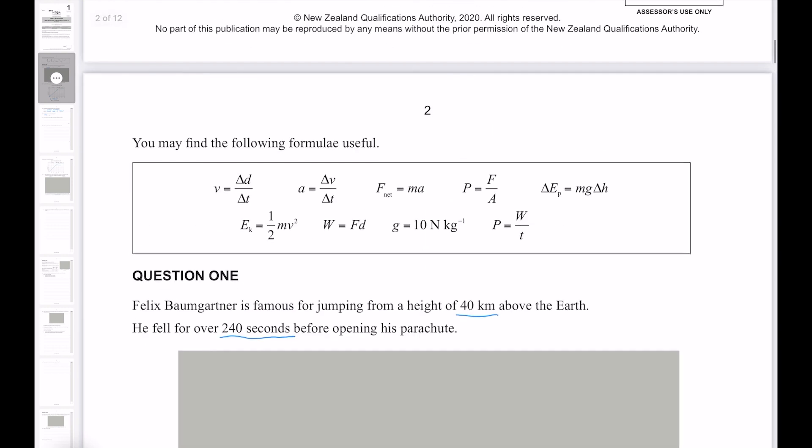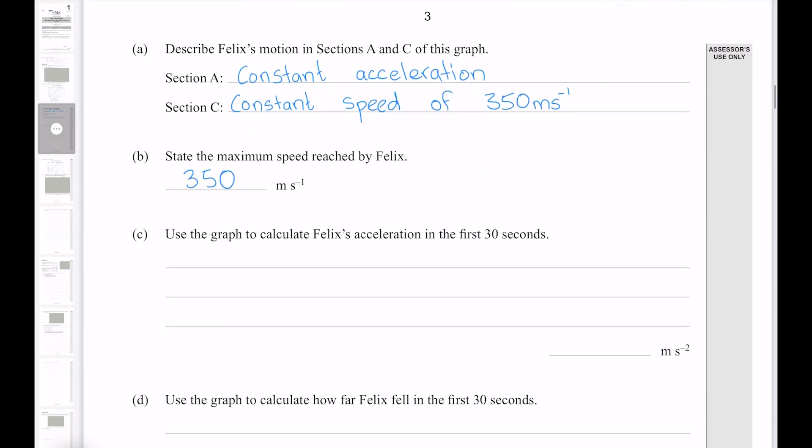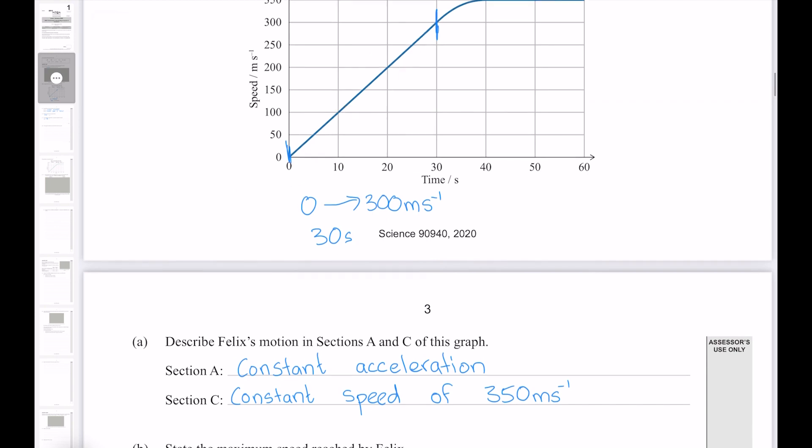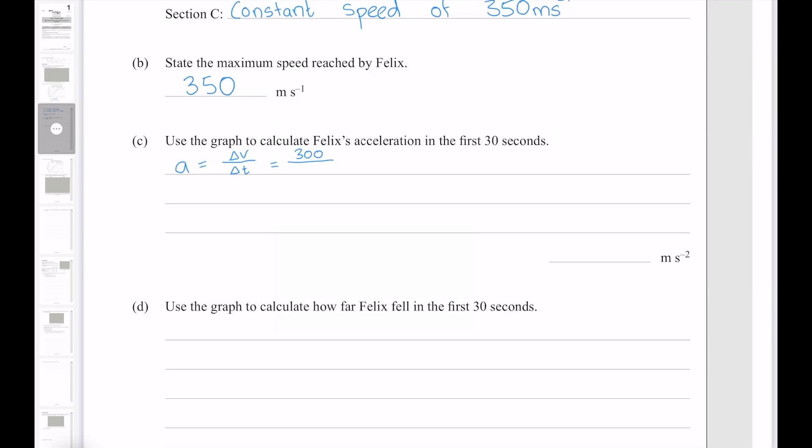The equation for acceleration that we're going to use is this one here. Our delta V is the change in velocity, which since he has gone from 0 to 300 is just 300. And our change in time is 30 seconds. And that gives us 10 meters per second per second.